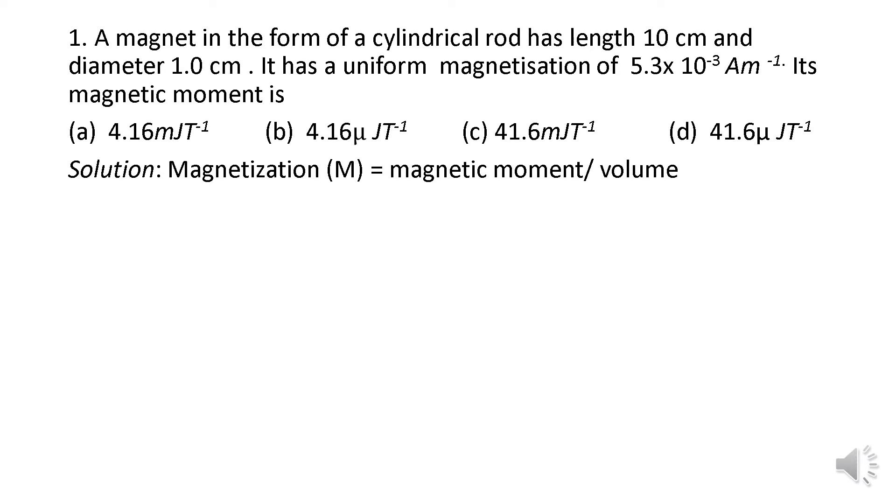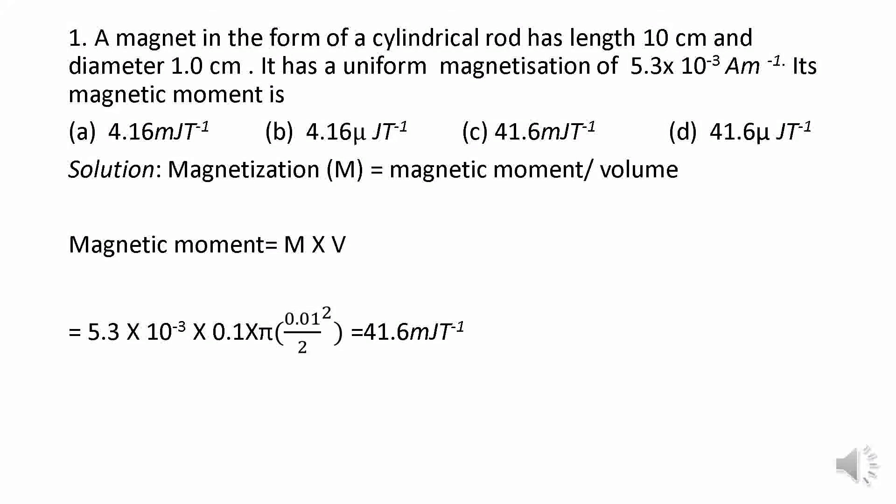Use the formula for magnetization: magnetic moment divided by volume. If we are calculating magnetic moment, rearrange to get magnetic moment equals magnetization times volume. Using the standard volume equation, substitute the magnetization value of 5.3 × 10^-3. Since we have diameter, convert it to radius. The result is 41.6 mJ per Tesla. Therefore, option c is correct.